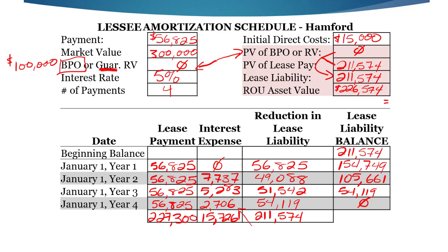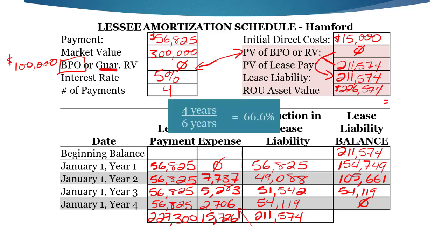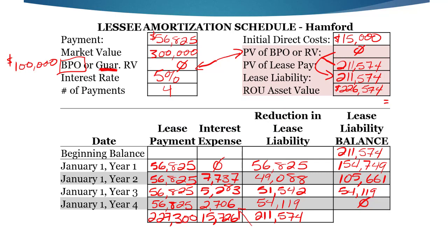We don't own it for the major part of its useful life because it's only four out of six years — that's 66%. So you could go either way: two-thirds of its life or 70% of its fair value could be called a financing lease, but you could also say we're not at the majority yet, so it's an operating lease. Chances are most companies would err on the side of this being an operating lease.